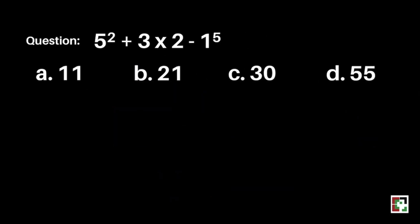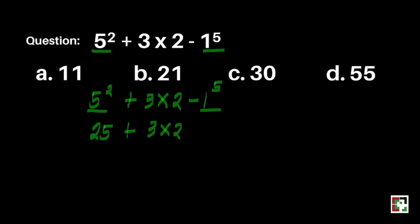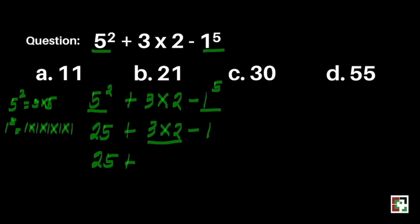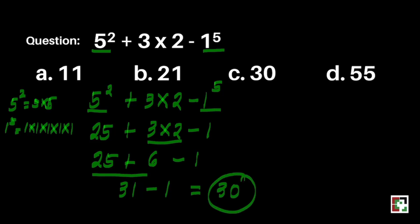Next question: 5 squared plus 3 times 2 minus 1 to the 5th power. Is it A) 11, B) 21, C) 30, or D) 55? Since we don't have any groupings, we proceed to exponents. 5 squared is 5 times 5, which gives us 25. 1 to the 5th power is 1 times 1 times 1 times 1 times 1, which equals 1. Next, we multiply: 3 times 2 is 6. So we have 25 plus 6 minus 1. That gives us 30. Our final answer is letter C.